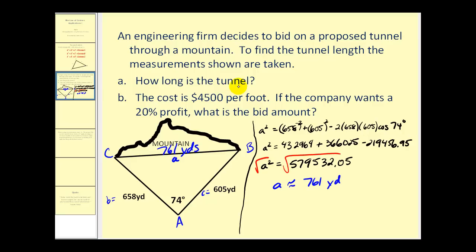So this is part A: how long is the tunnel? For part B, the cost is $4500 per foot, and they want to know what is the bid amount if they want a 20% profit. Let's take this information over to the next screen.